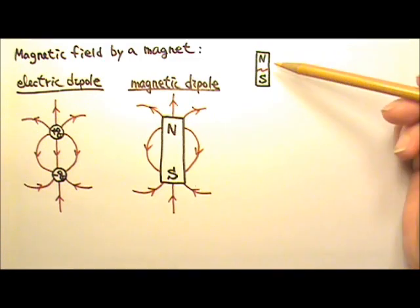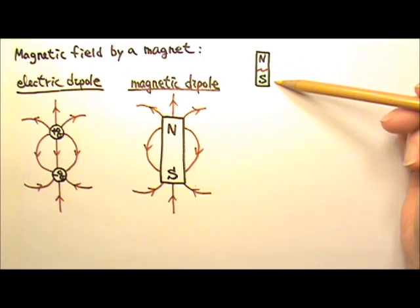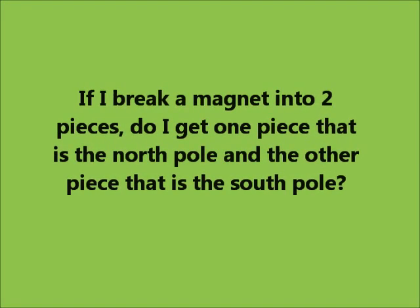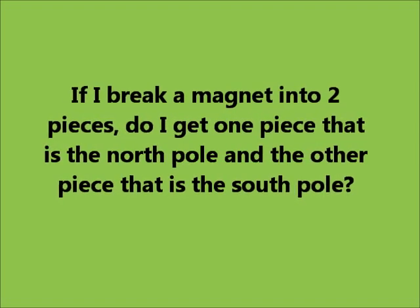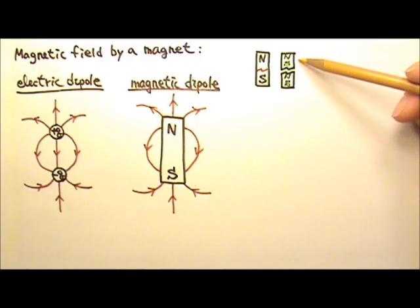Let's say I break a magnet into two pieces. Do I get one piece that is the north pole and the other piece that is the south pole? No, what I get are two magnets, with north-south, north-south.